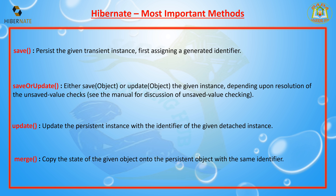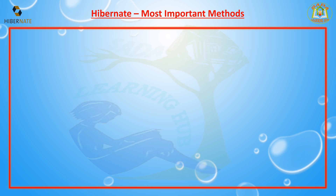The next method is merge. The merge method copies the state of a given object onto the persistent object with the same identifier. It is used to update data by converting the state of an object with the same identifier.